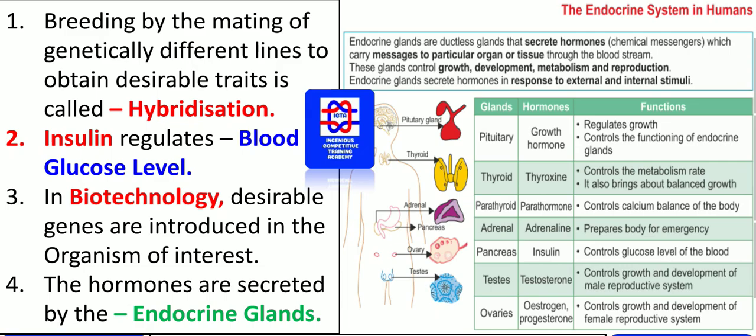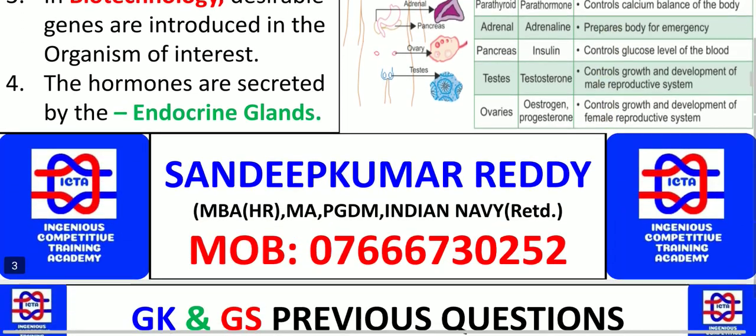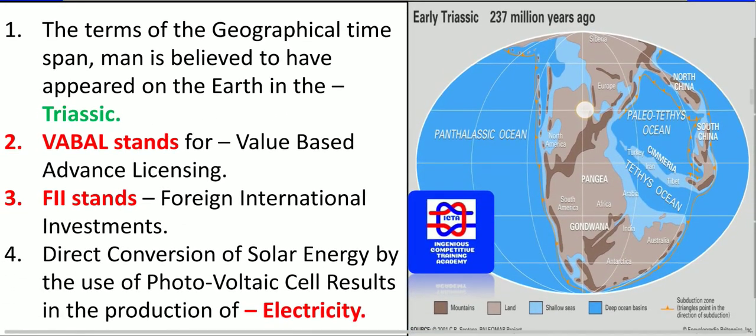In terms of the geographical time span, man is believed to have appeared on the Earth in the Triassic period. You can see on the right side how exactly the early Triassic era is represented.